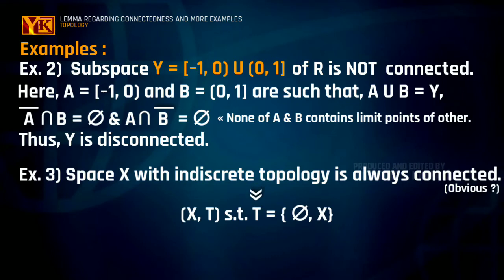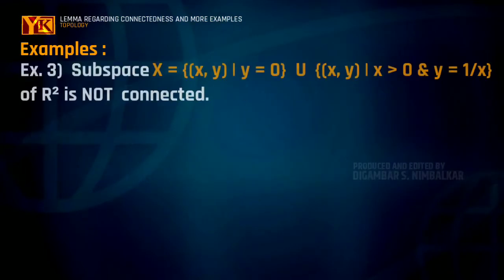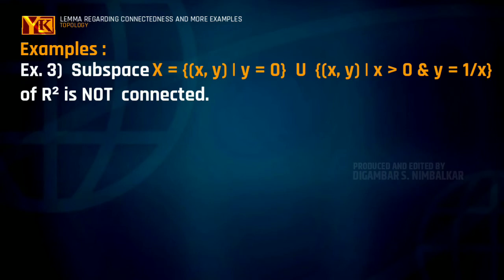Another example: a topological space with the indiscrete topology is always a connected space. Another example — consider X = {(x, y) : y = 0} ∪ {(x, y) : x > 0 and y = 1/x}. This space X is not a connected space.